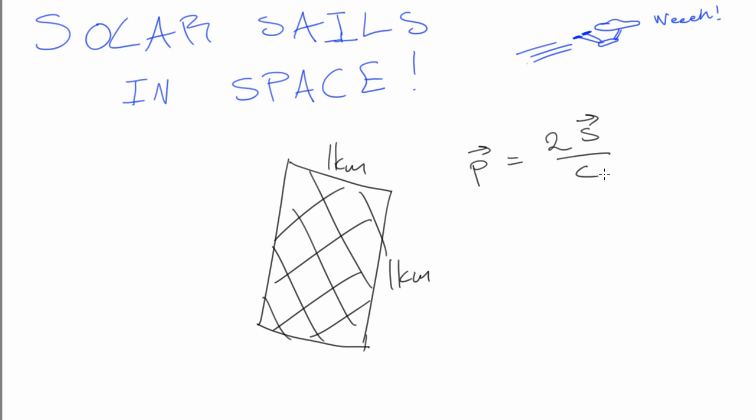We're going to use the solar pressure that we calculated in the previous question as an estimate. That was equal to 3 × 10^-6 newtons per meter squared. And now we want to calculate it for our solar sail, which is just equal to this.